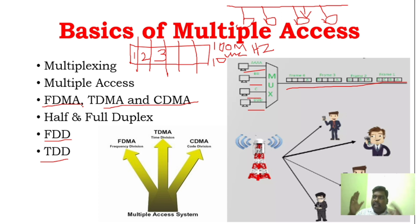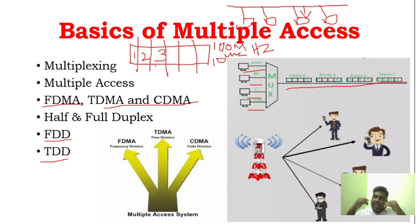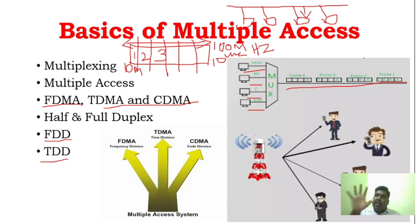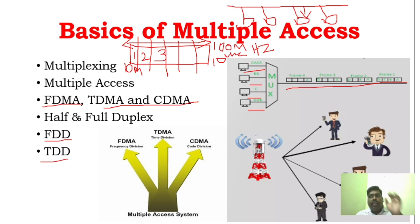This is Frequency Division Multiple Access. In FDMA, the advantage is: if you have 10 users, each can transfer on their own frequency slot simultaneously. However, each user is limited — they can use only their assigned bandwidth, say 10 Mbps out of 100 Mbps. That is the core concept of FDMA.